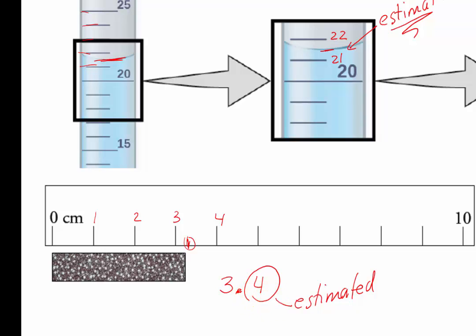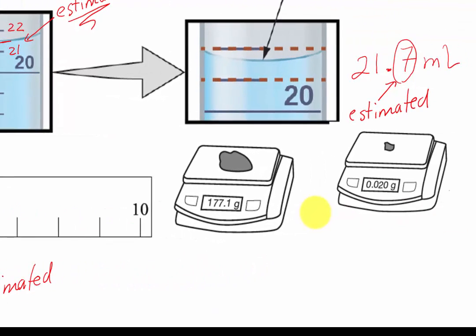When you have an electronic instrument, here we have an electronic scale. Now this makes our life a lot easier because all the significant digits and the estimate values are already included in the displays.